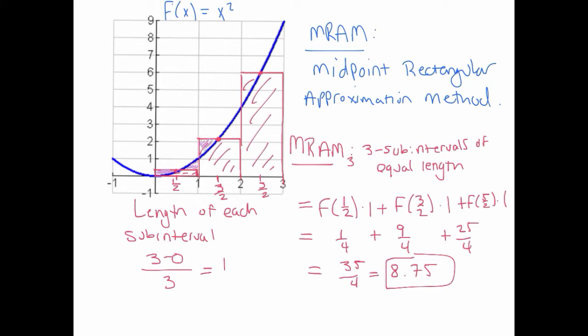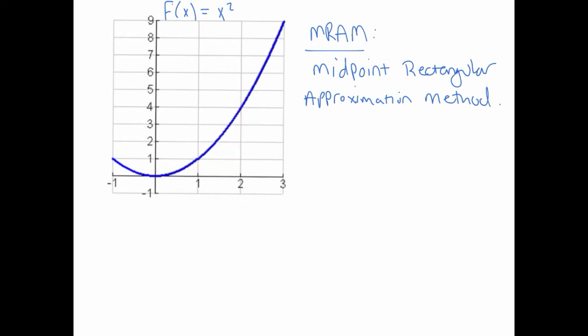And so those two errors might balance each other out on each subinterval. We're getting too much area here, but then we're not getting enough over here. And so they're not going to be exactly the same because the function might be a little bit different. But on average, we should expect that MRAM is going to accommodate the over and underestimating on each subinterval and lead to a more refined answer.